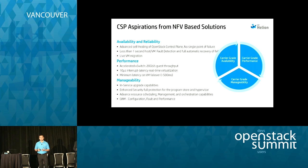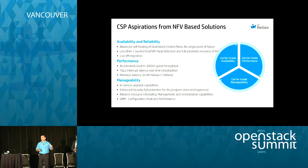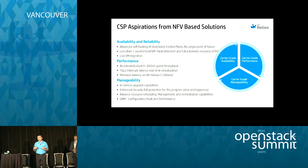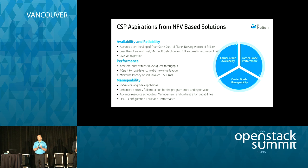Within the network or NFV context, our definition of carrier grade falls into three buckets. First, availability and reliability: you want the platform — the OpenStack control plane as well as the data plane where VMs are running — to be capable of north of five nines availability. If you follow the OpenStack HA guidelines, you're able to get up to four nines. Getting five or six nines in the control plane is very hard, but that is what's needed.